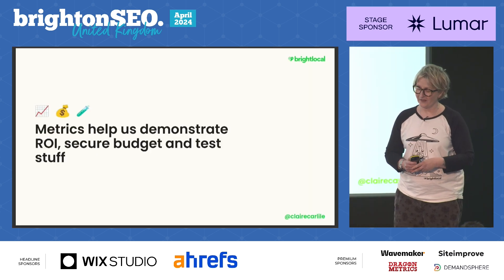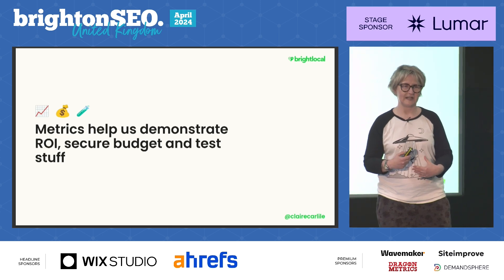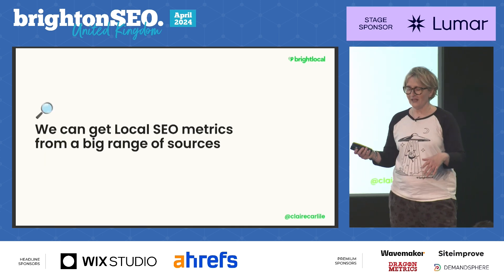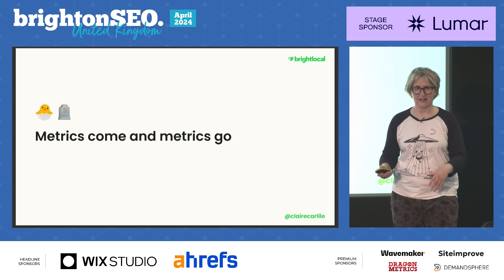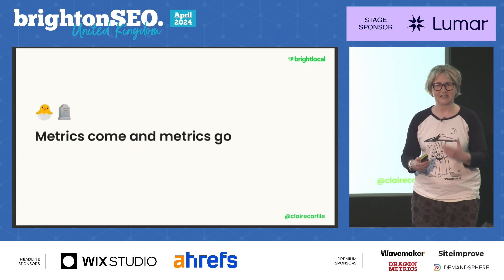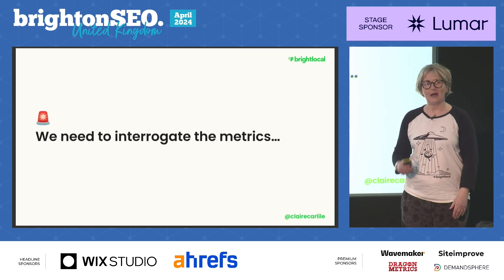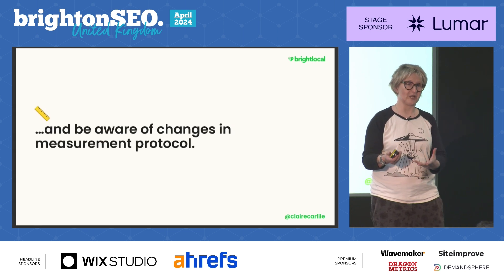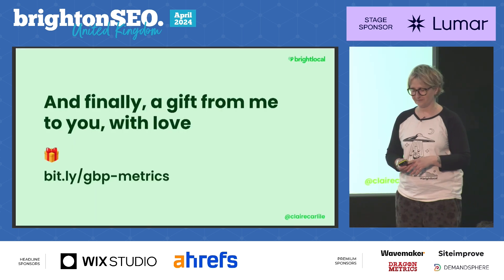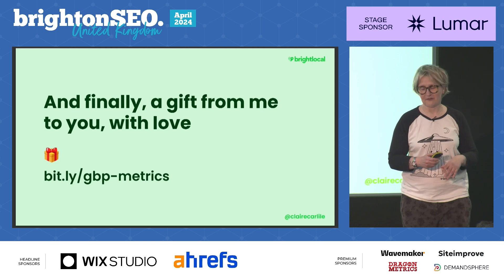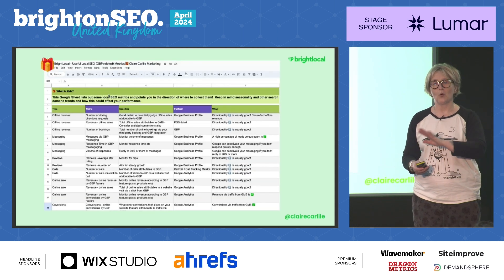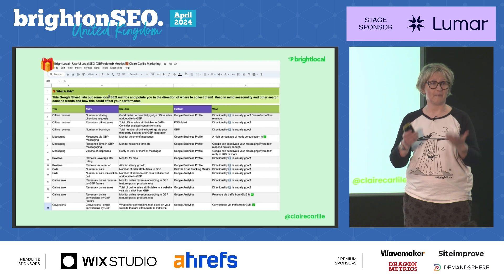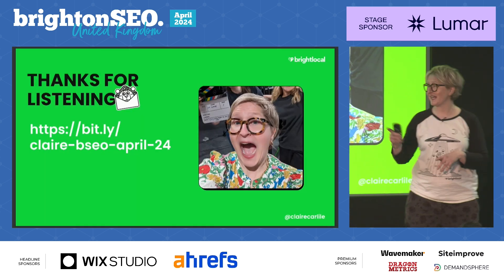Let's wrap it up. Metrics are super important because we want to stay gainfully employed — they help us demonstrate return on investment, secure budget, and all of that good stuff. We can get those local SEO metrics from a big range of sources; they come and go, so we mustn't fixate on one thing and need to keep revisiting what's important. We need to interrogate the metrics and not blindly follow them, because sometimes measurement protocol changes will turn that data on its head. And finally, here's a Google Sheet with all of those metrics, telling you where to get them, why you would need them, and a suggested amount of time you should leave between checking them. Thank you very much for listening.